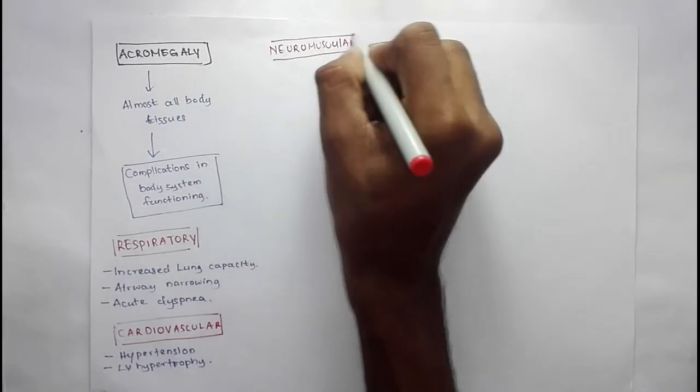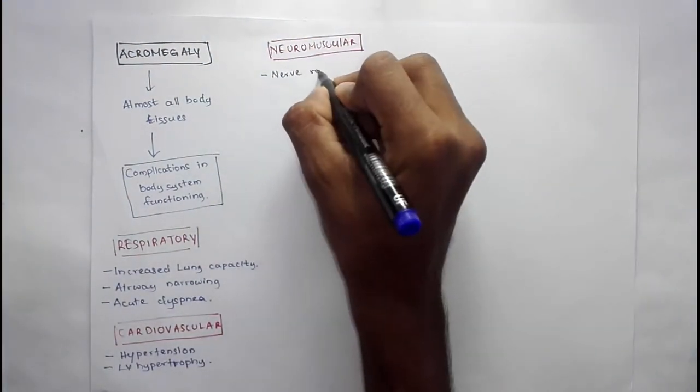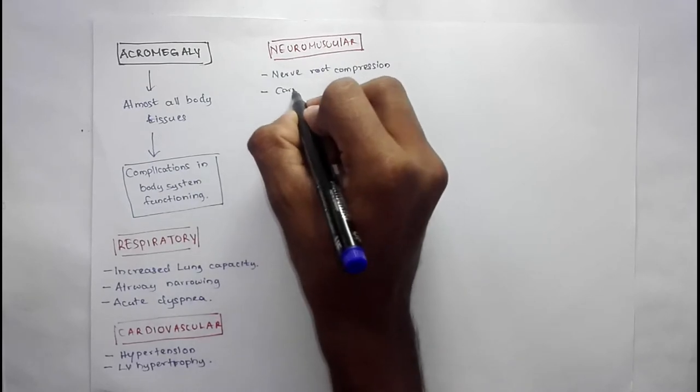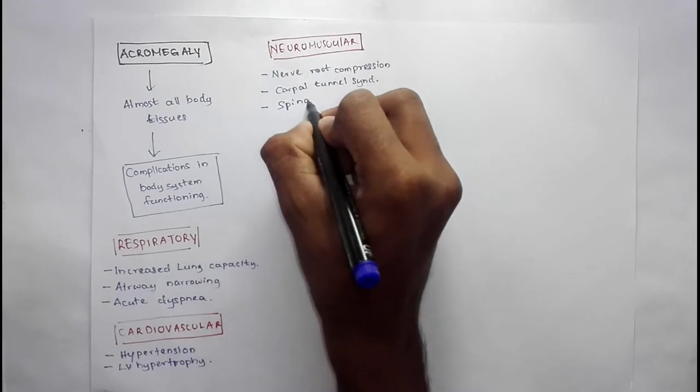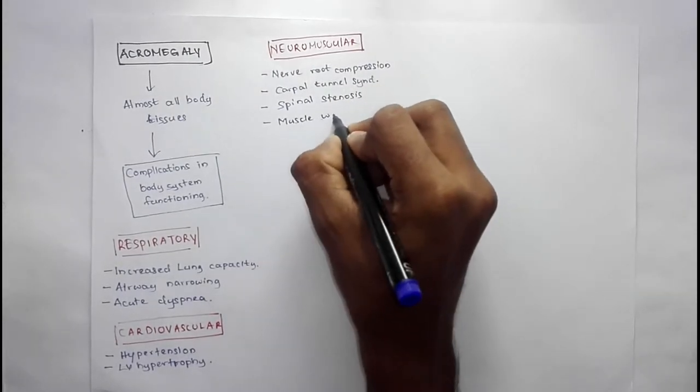Neuromuscular complications are nerve root compression, carpal tunnel syndrome, spinal stenosis, and muscle weakness and fatigue.